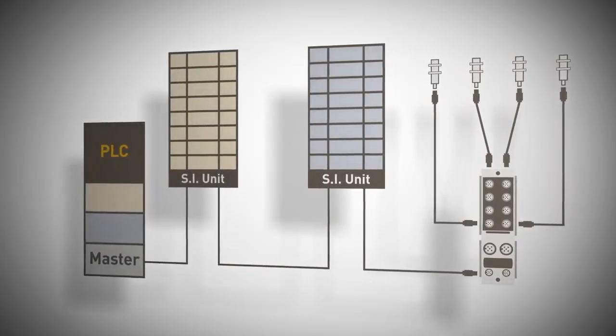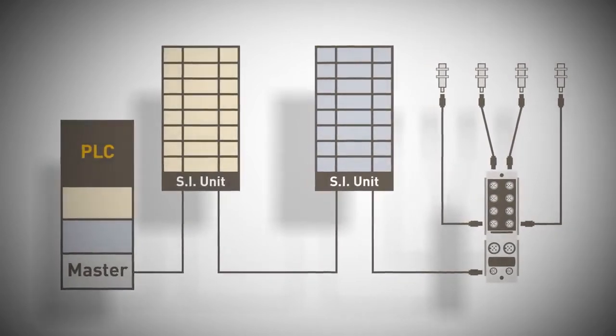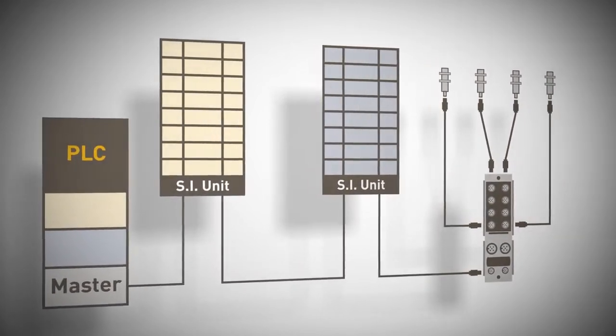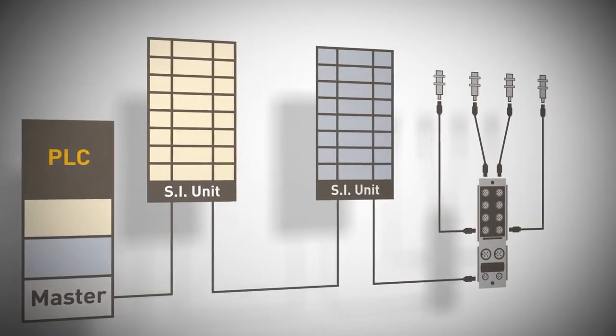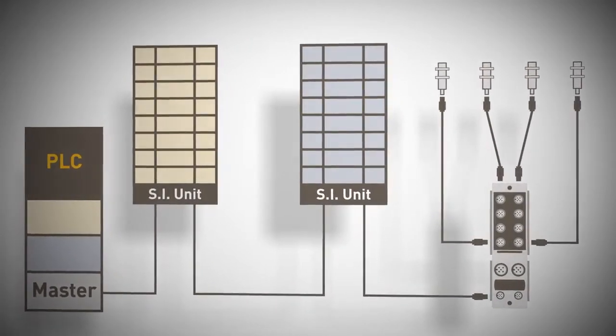So if we look at just a single wire off of a master, you have one cable between the PLC, the controller, the valves, and the sensor. Again, it simplifies all the wiring.